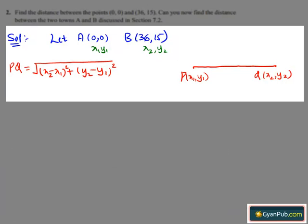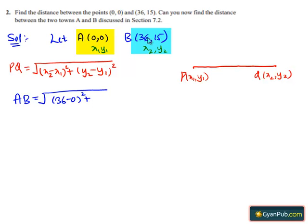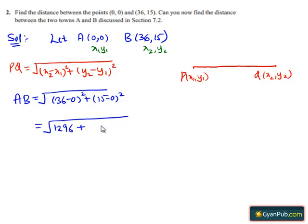Substituting the values of x1, y1 and x2, y2 in the formula, we have the distance AB equals the square root of (36 - 0) whole square plus (15 - 0) whole square, which is equal to the square root of 1296 plus 225, that is equal to the square root of 1521, which is 39.